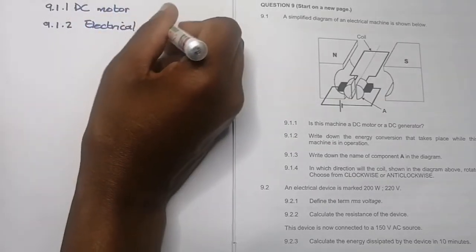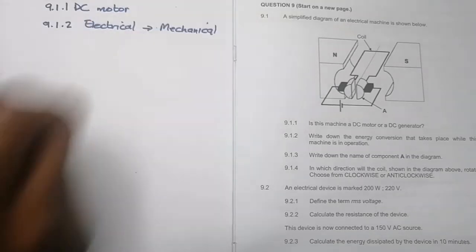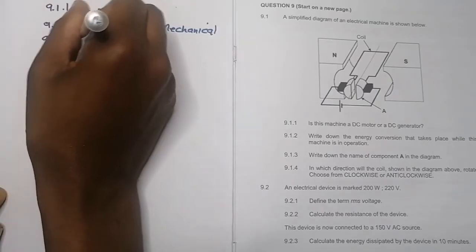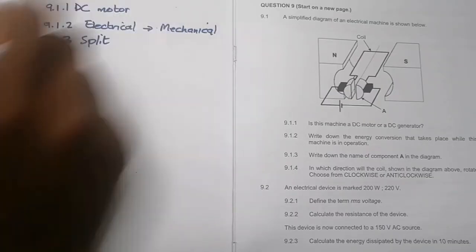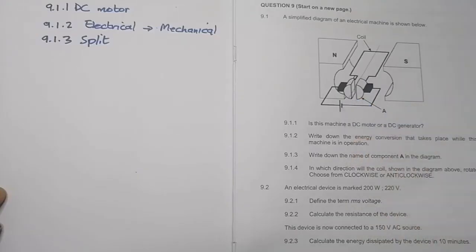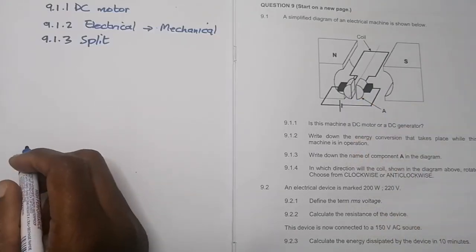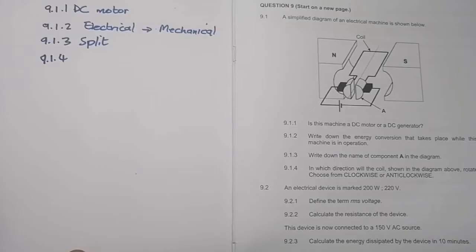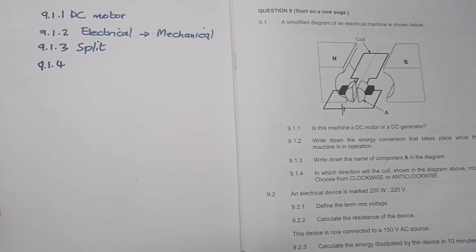They say write down the name of component A in the diagram. In this case, this would be our split rings. Those are split rings, and basically what this tells us is that this is a DC motor. If we had slip rings, then we would be dealing with AC. This is quite an easy section, ladies and gents. For those of you who haven't watched our videos on this, please go and watch that. I promise you it will cure all your ailments when it comes to this section.